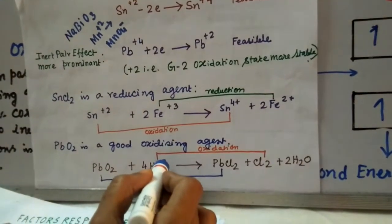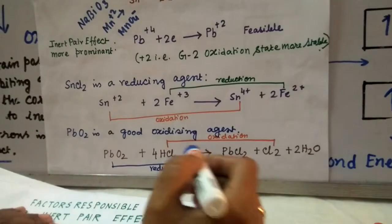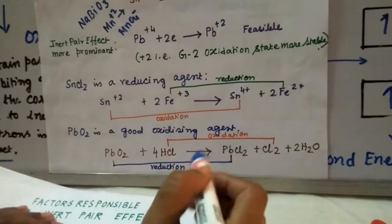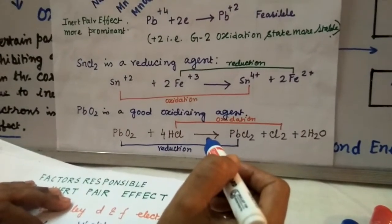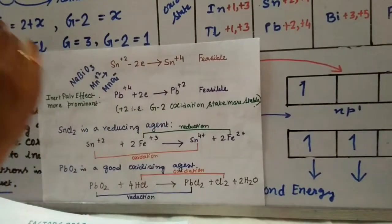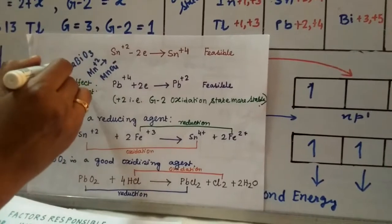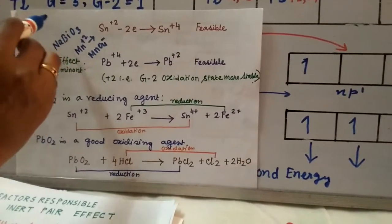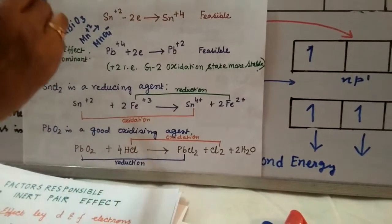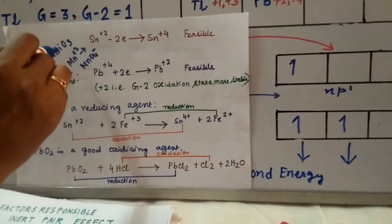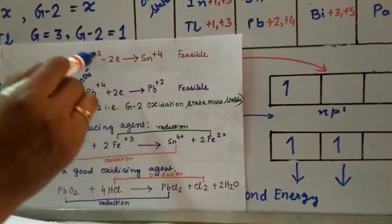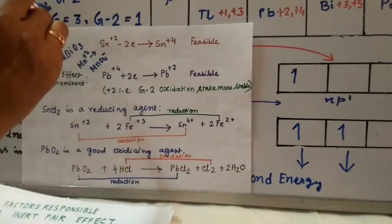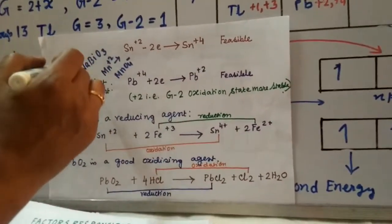We can also discuss bismuth. For bismuth, the +5 oxidation state is very reactive as an oxidizing agent. Sodium bismuthate is a chemical compound used in the laboratory as an oxidizing agent: bismuth in the +5 state oxidizes Mn²⁺ to permanganate (MnO₄⁻), where manganese goes from +2 to +7, while bismuth is reduced from +5 to +3. This reaction is also very frequently used in the laboratory.